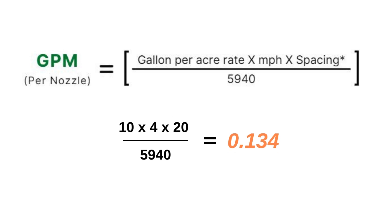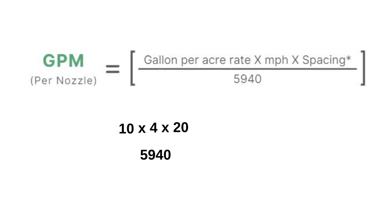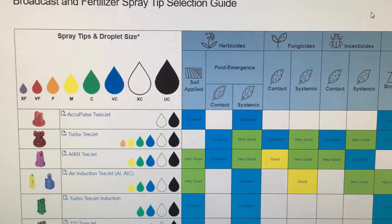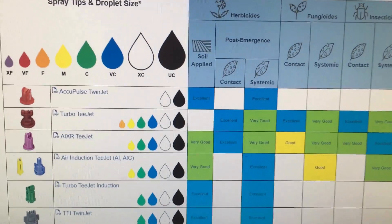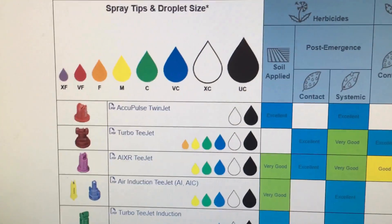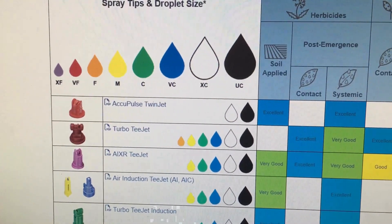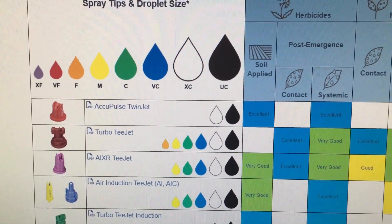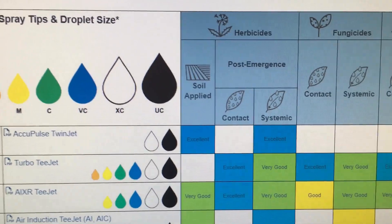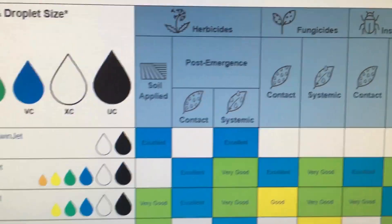If you would like more details regarding this formula check out the link in the description. Now that we know this number we can refer to the nozzle chart to find a spray tip that puts out 0.13 gallons per minute at your desired operating pressure.